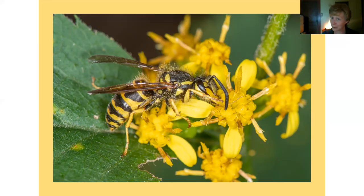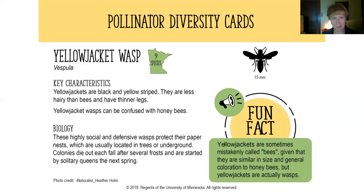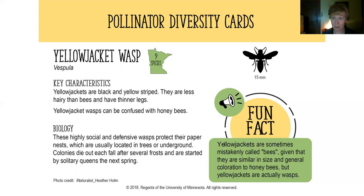Next is the yellow jacket — nine different species in Minnesota. They are black and yellow striped, less hairy than bees, with thinner legs. People often confuse them with honey bees, and many stings attributed to bees are actually from yellow jackets. They are highly social and tend to be defensive around their paper nests, which are much larger and located in trees or underground. Their colonies die out each fall after several frosts and are started fresh from solitary queens in the spring. Despite the similarity in size and coloration, yellow jackets are actually wasps, not bees.